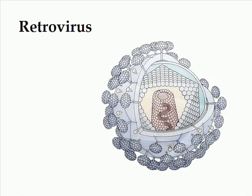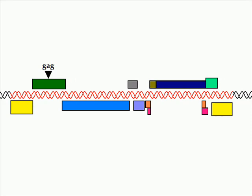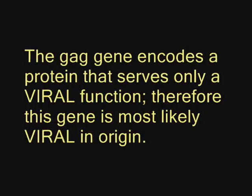In a mature variant, the genetic material and enzymes needed for insertion must be protected from the environment. The part of the virus responsible for this protection is called the nucleocapsid, a nearly impenetrable shell of proteins surrounding the viral core. The proteins in this shell are encoded in the GAG gene. Apart from this purely viral purpose, there is no known function for the GAG gene or the capsid proteins. This points to that gene being viral in origin.